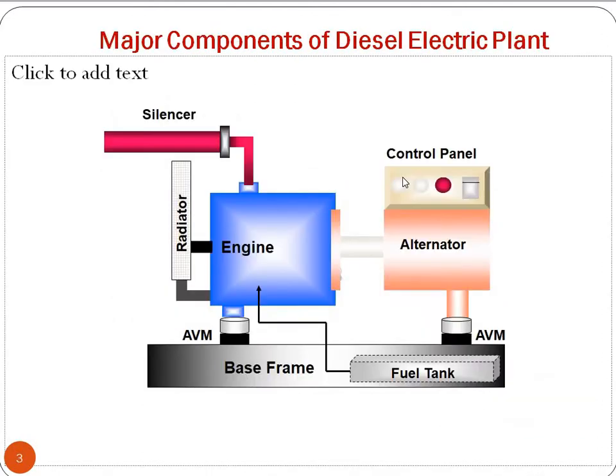To understand the main components of the diesel electric plant: the first one is the engine, second is the alternator, third is the control panel, then we have the base frame, fuel tank, radiator and silencer, and lastly, to reduce the vibrations of the diesel engine, we have the anti-vibration modules.